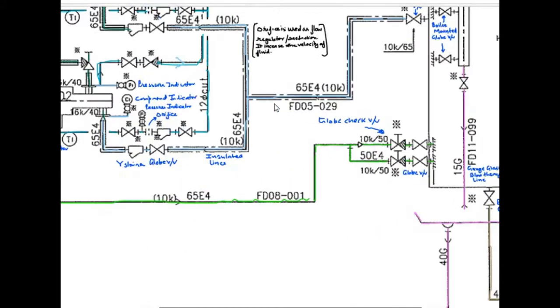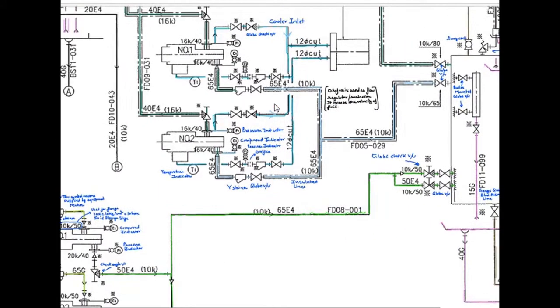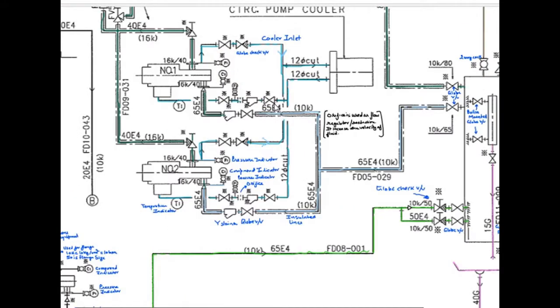Now, from the auxiliary boiler, we have to circulate the water from the auxiliary boiler to the exhaust gas economizer. The suction line is this one. It's insulated line, and these are going to circulating pump 1 and 2. Here, you can see number 2 circulating pump. Here, you can see number 1 circulating pump.